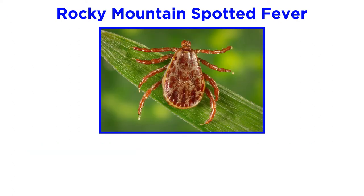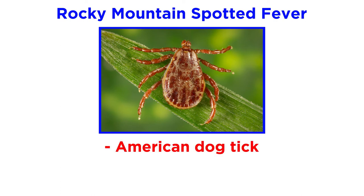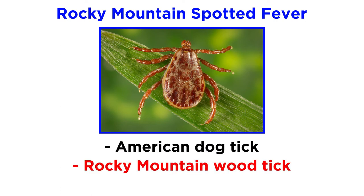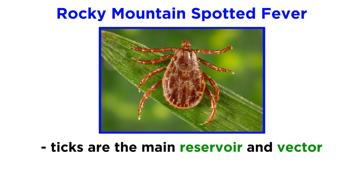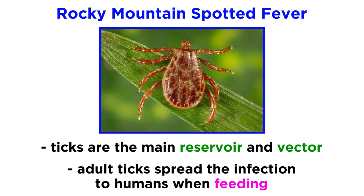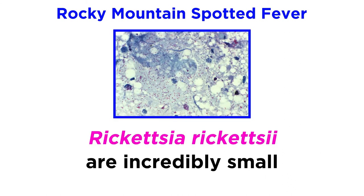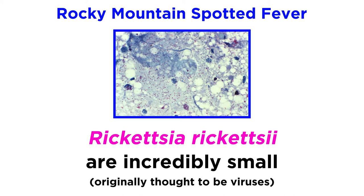Rocky Mountain spotted fever is transferred to humans by ticks, either the American dog tick, Rocky Mountain wood tick, or brown dog tick. Ticks are the main reservoir and vector for the disease, and adult ticks spread the infection to humans when they feed. The bacteria that the ticks transfer, Rickettsia rickettsii, are incredibly small, so much so that they were originally thought to be viruses.